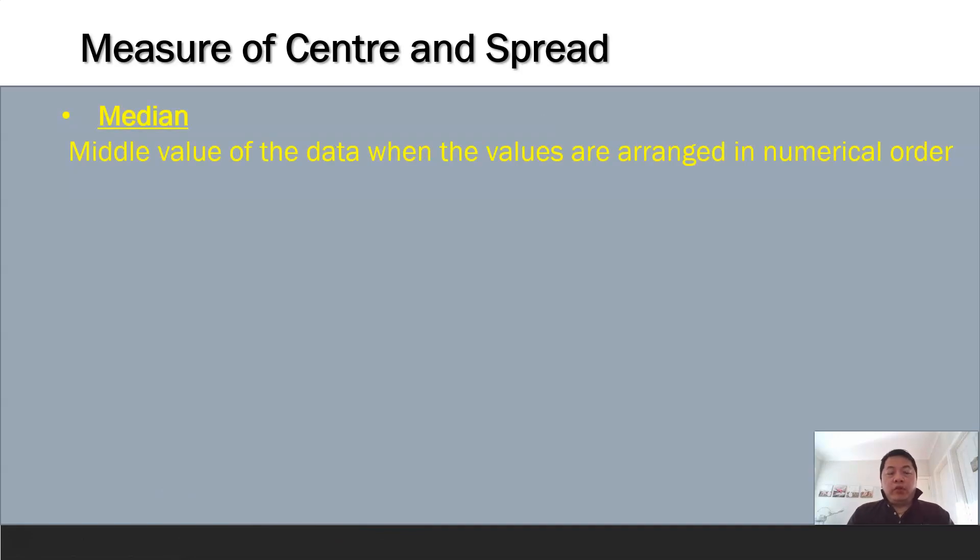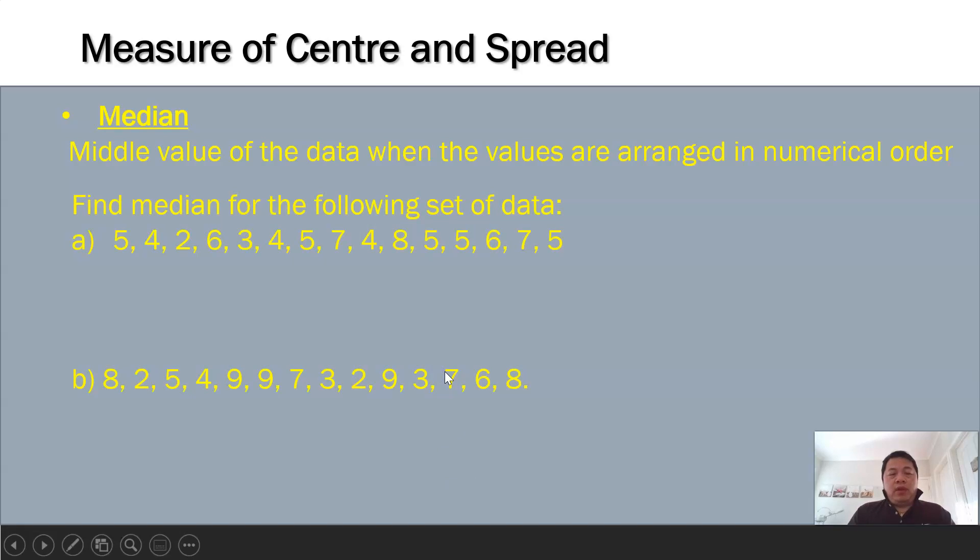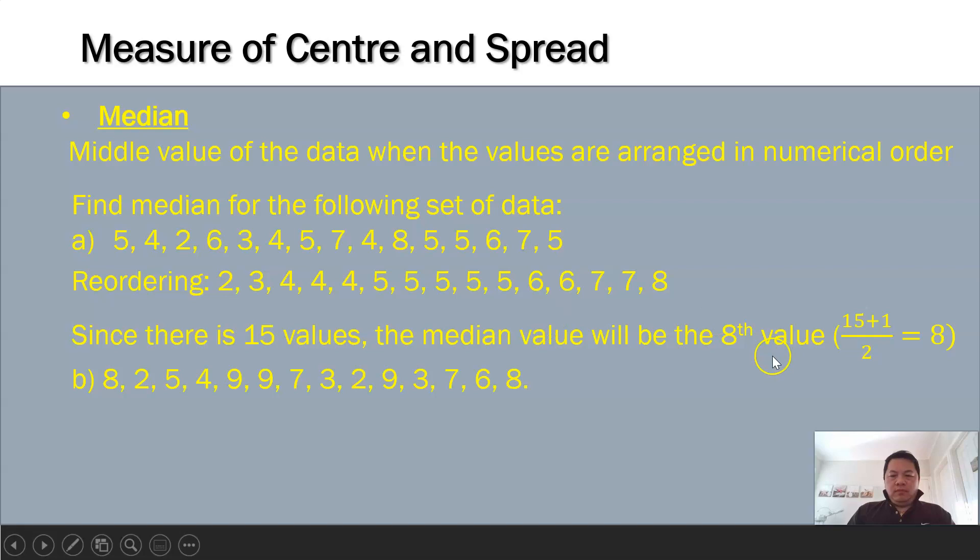Next, median. Do take note, median is a quite tricky concept. When you're given a set of data to find median, you need to reorder the data from smallest to largest. From here I've got to find out the number of data given to us: 2, 4, 6, 8, 10, 12, 14, 15. Good, 15. Whenever it's odd number it's good because we can find a middle number. If it's odd number, just add 1 divided by 2, so we are looking for the 8th value. The 8th value is here, so 5 is the median for this set of data.